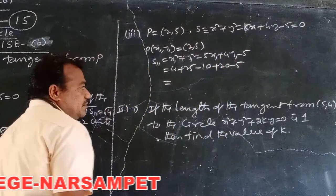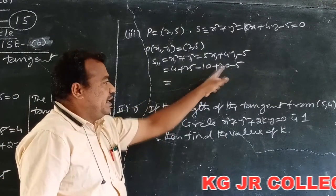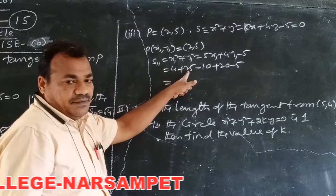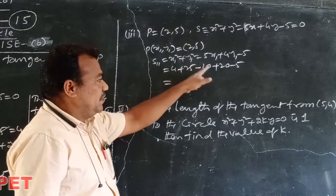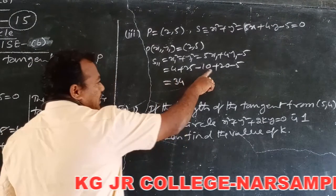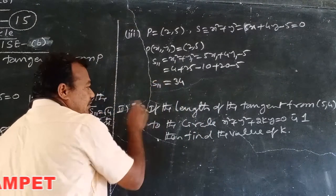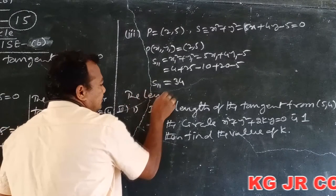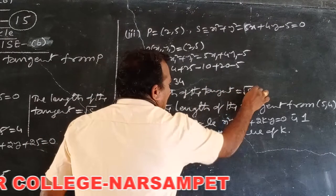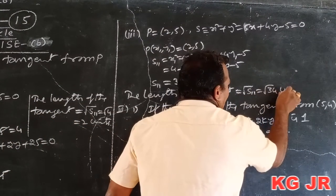x₁² = 4, y₁² = 25, minus 5×2 = 10, plus 4×5 = 20, minus 5. Simplifying: 4 + 25 = 29, plus 20 = 49, minus 10 = 39, plus 5 = 34. Wait — simplifying step by step gives S₁₁ = 34. The length of the tangent is root S₁₁ = root 34.